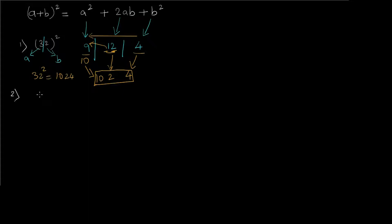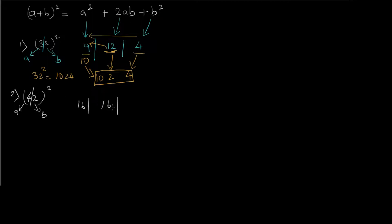Let's see another example — the square of 42 using the same trick. Dividing into two parts: a = 4 and b = 2. So a² is 4² = 16. The center part 2ab is 2 × 4 × 2 = 16. And the last part b² is 2² = 4.